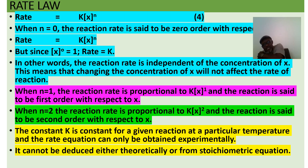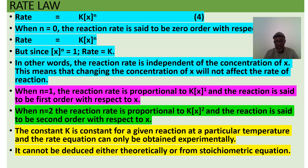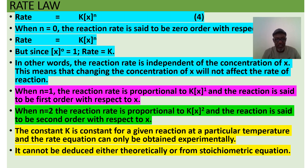The rate law is obtained experimentally. The rate constant k applies to a given reaction at a particular temperature, and the rate equation cannot be deduced theoretically or from stoichiometry alone. You cannot look at the equation's stoichiometry and determine the rate law — it must be obtained experimentally.